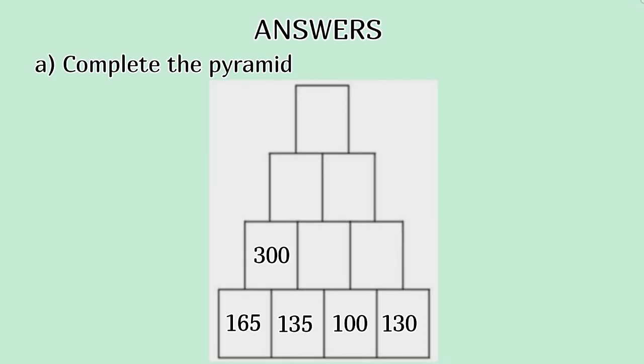Answers. A. Complete the pyramid. 165, 135, 100, 130. So here we have to add. 165 plus 135 is 300. 135 plus 100 is 235. 100 plus 130 is equal to 230. 300 plus 235 is equal to 535. 235 plus 230 is equal to 465. 535 plus 465 is equal to 1000.